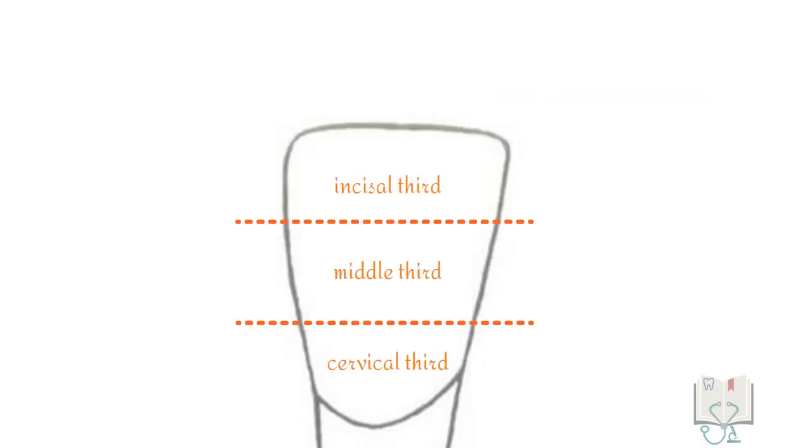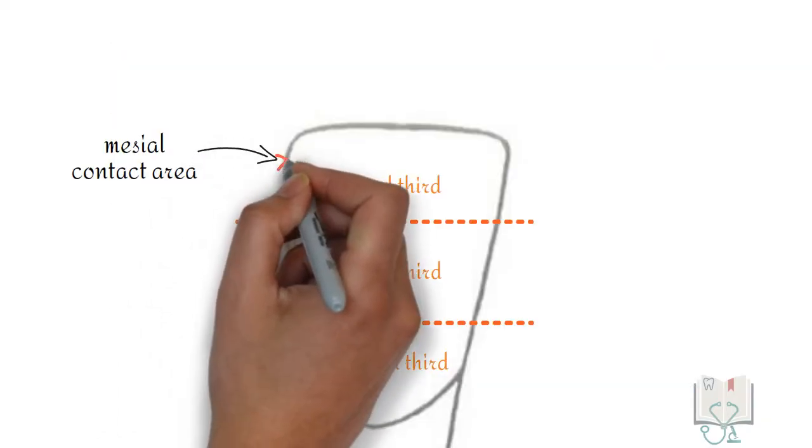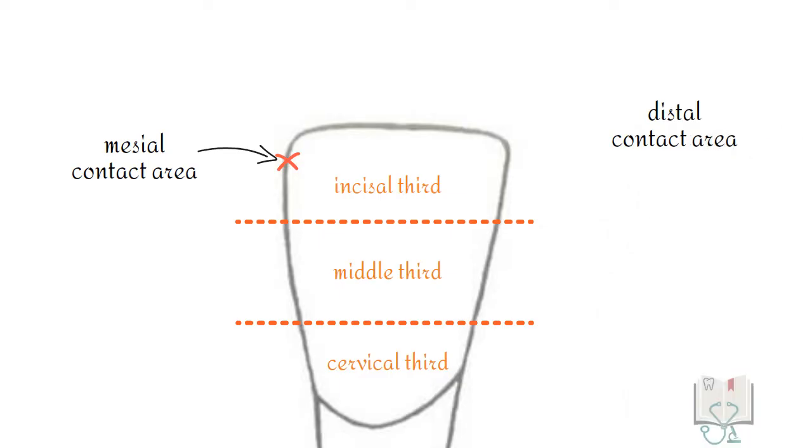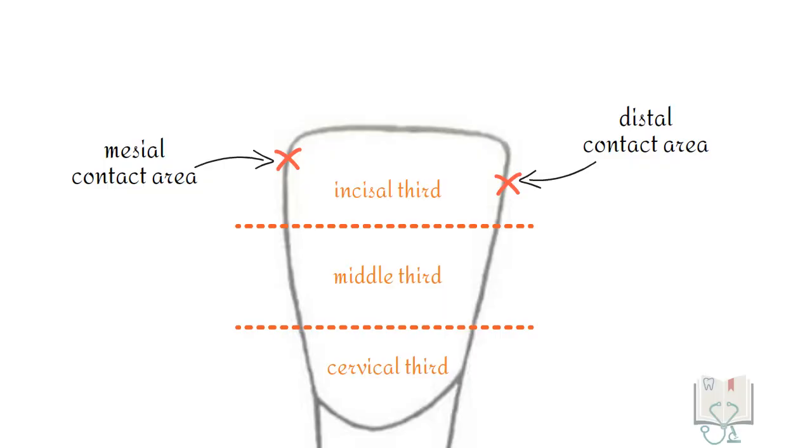Coming to the contact areas, the mesial contact area by which the tooth contacts the central incisor is in the incisal third, and the distal contact area by which the tooth contacts the canine is also in the incisal third but slightly cervically positioned.